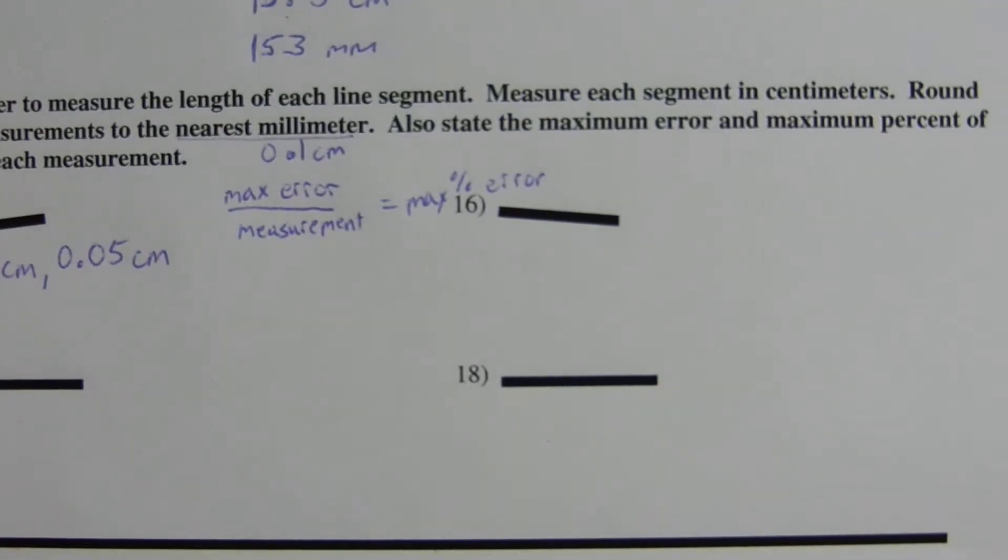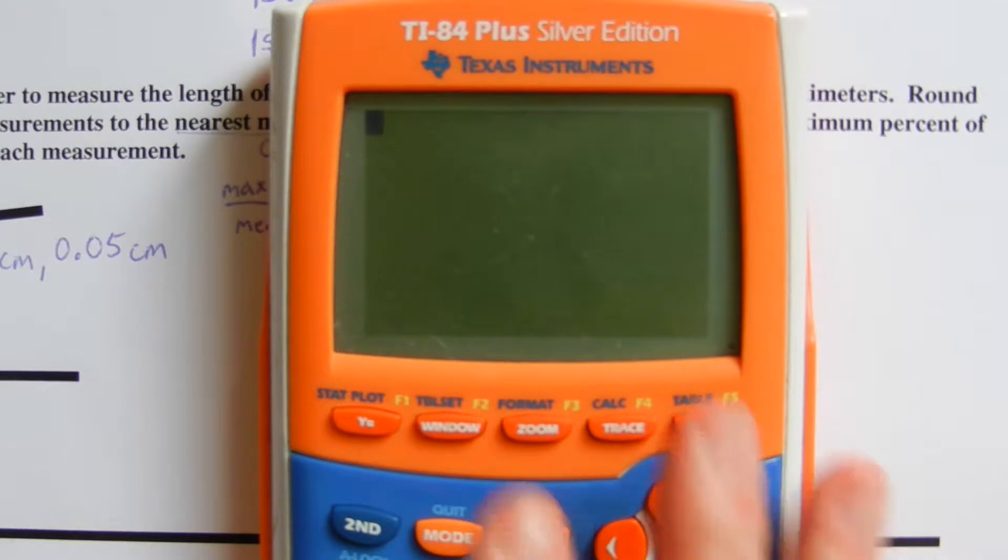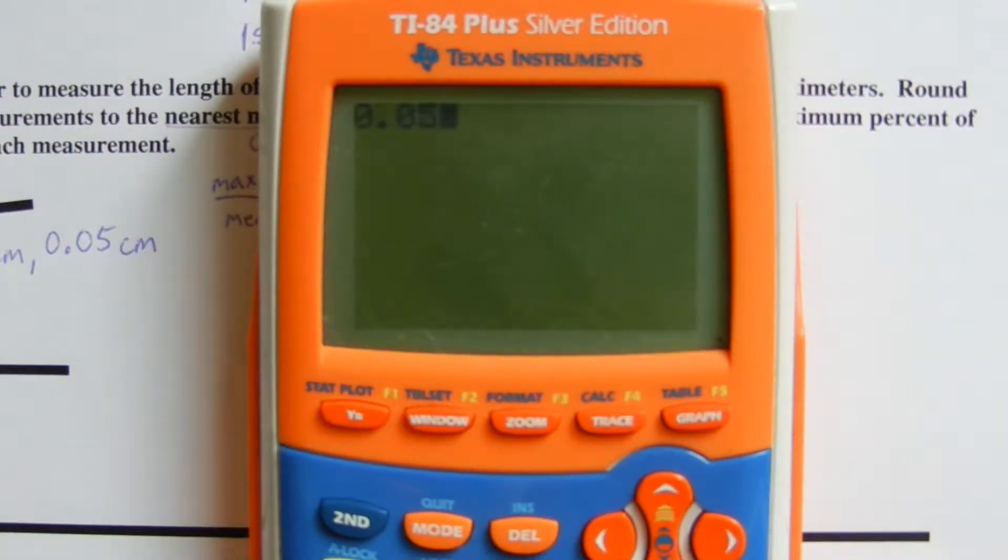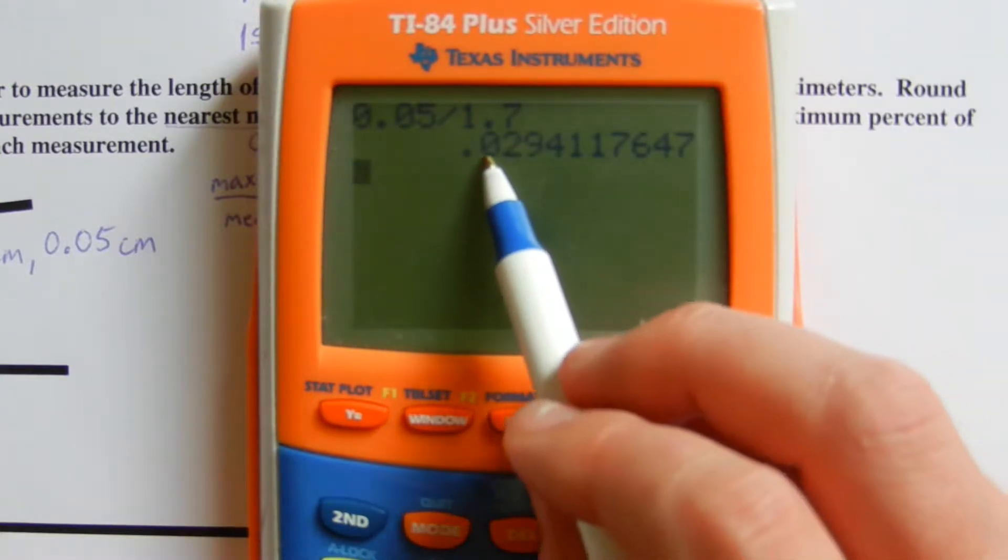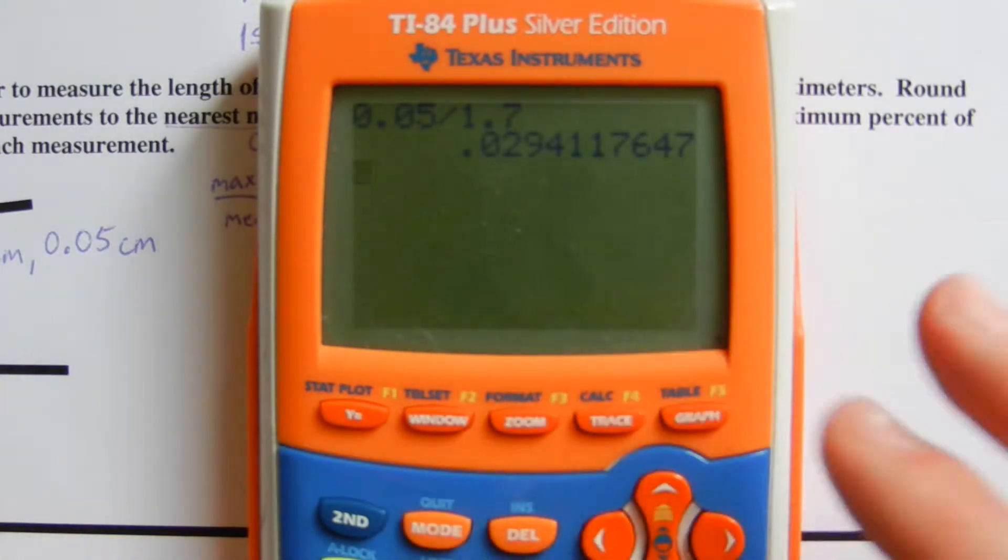So on our calculator, we're going to take our max error, which is 0.05, and we're going to divide that by our measurement, which is 1.7, to get our max error in decimal form, which is 0.029.